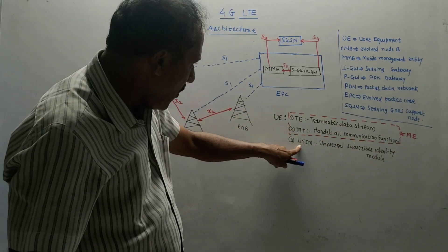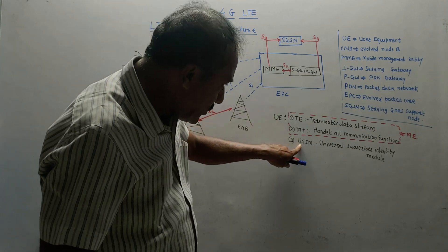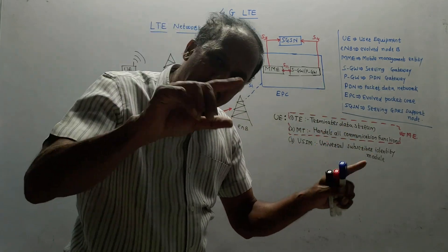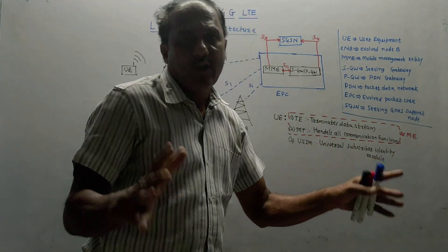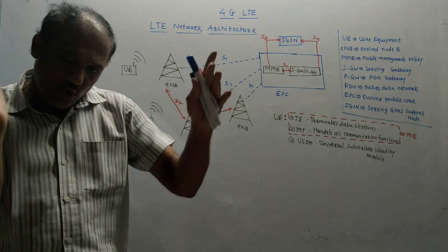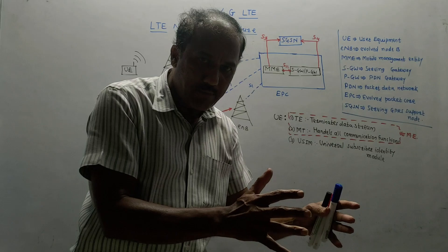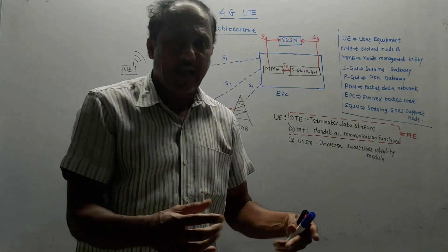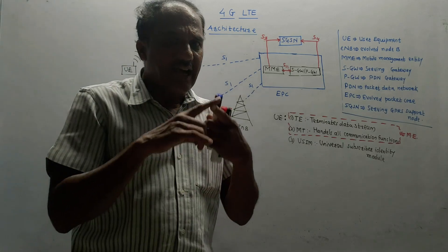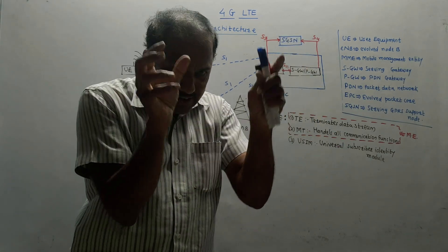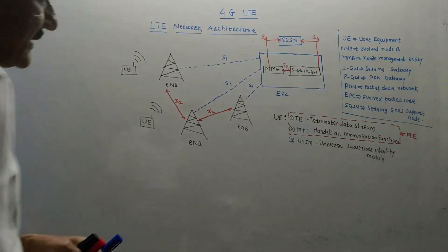The next block of UE, that is user equipment, is USIM, universal SIM. I hope everyone is aware of SIM. SIM is subscriber identity module. Basically, SIM stores the user-related information. It stores the user's phone number, home network for that particular user, as well as security-related information. All these informations are in embedded form in the SIM card.